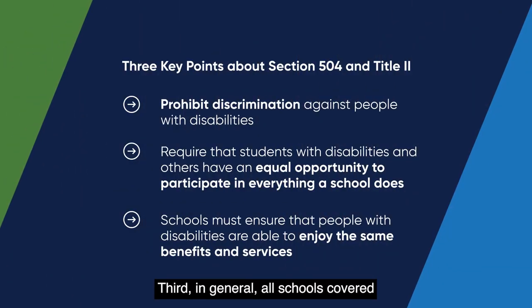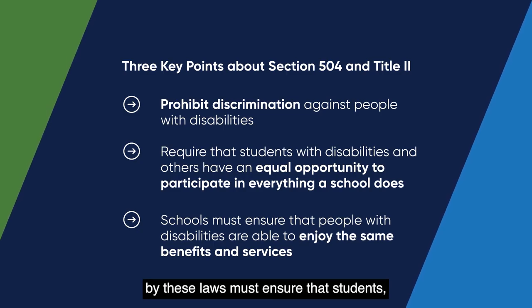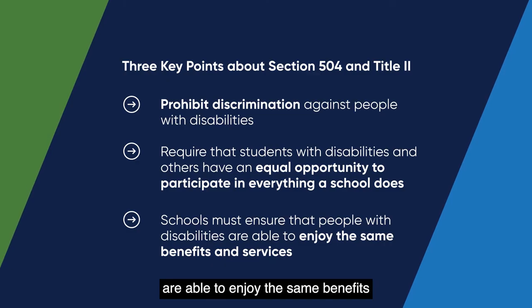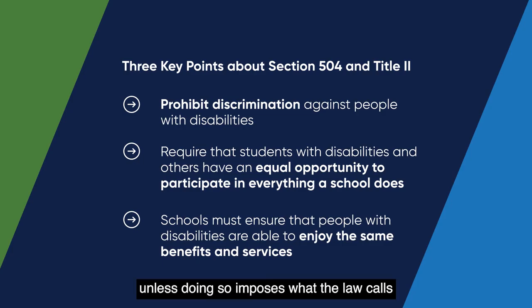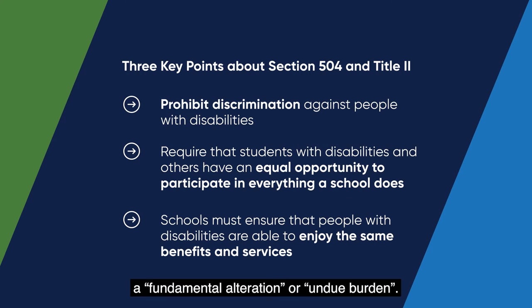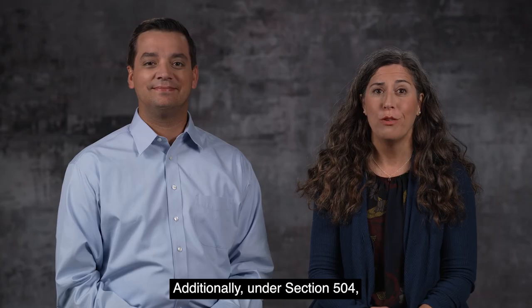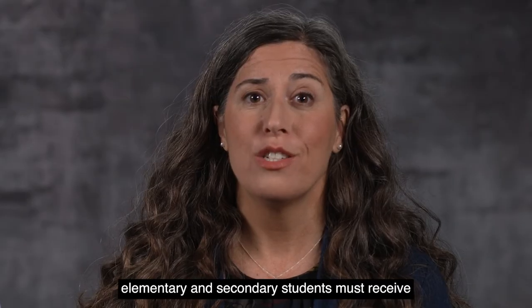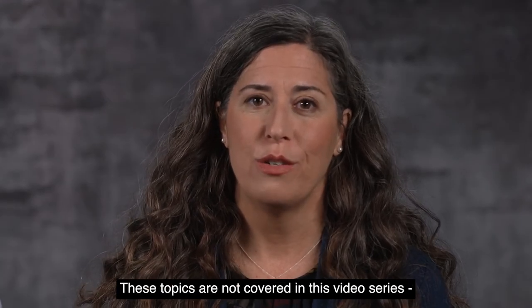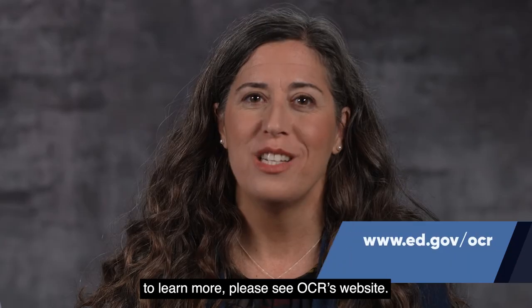Third, in general all schools covered by these laws must ensure that students, parents, caregivers, and community members with disabilities are able to enjoy the same benefits and services as their peers without disabilities, unless doing so imposes what the law calls a fundamental alteration or undue burden. Additionally, under Section 504, elementary and secondary students must receive what's called a free appropriate public education, or FAPE. These topics are not covered in this video series — to learn more, please see OCR's website.